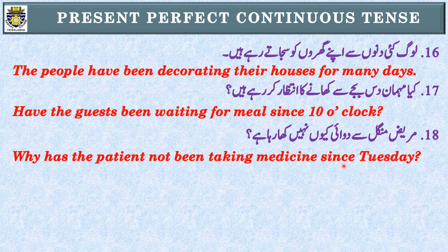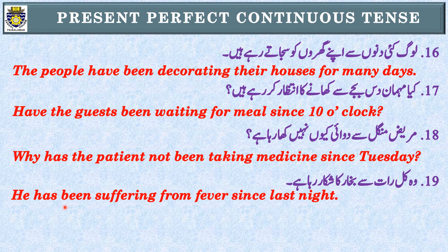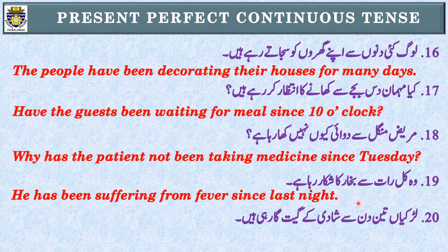Sentence 19: 'وہ کل رات سے بخار کا شکار رہا ہے۔' Identification: 'رہا ہے' اور 'کل رات سے' — Present Perfect Continuous Tense۔ Subject: 'وہ' یعنی he — third person singular — has been۔ He has been suffering from fever since last night.